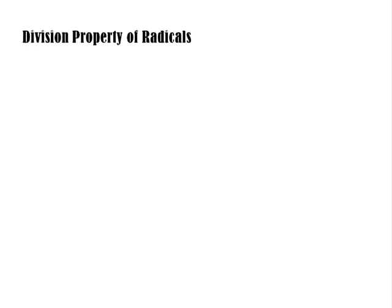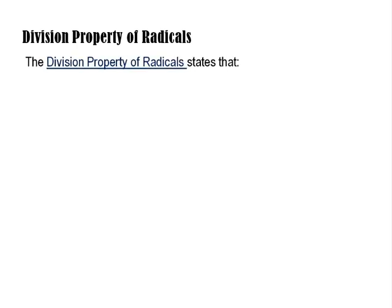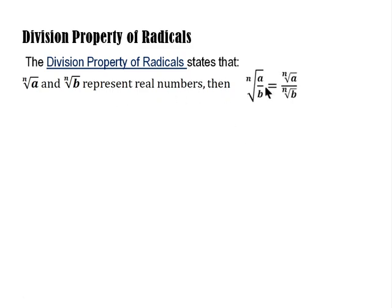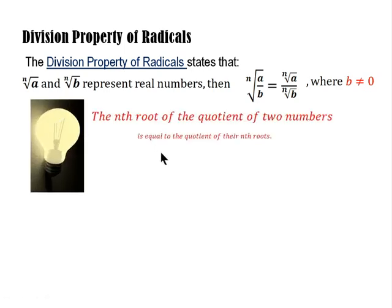Now let's go to the division property of radicals. It states that if the n-th root of a and the n-th root of b represent real numbers, then the n-th root of (a over b) is equal to the n-th root of a over the n-th root of b. Note that b cannot equal zero since division by zero is undefined. In short, the n-th root of the quotient of two numbers equals the quotient of their n-th roots.